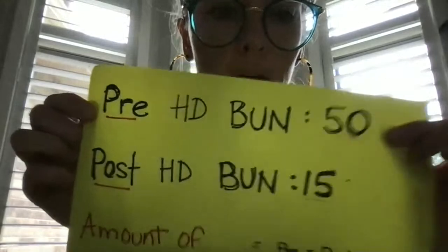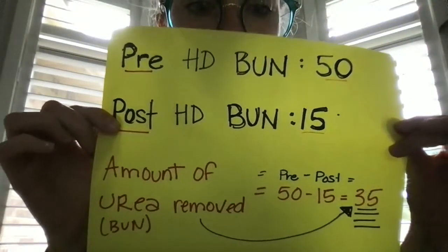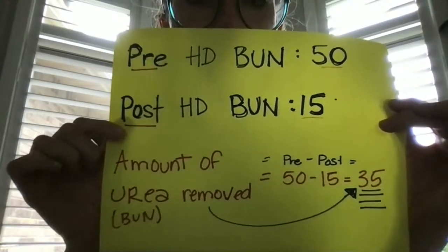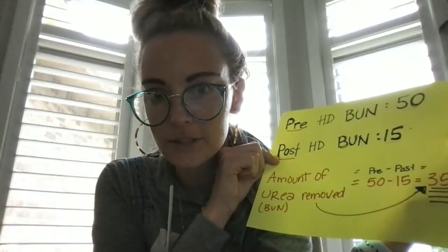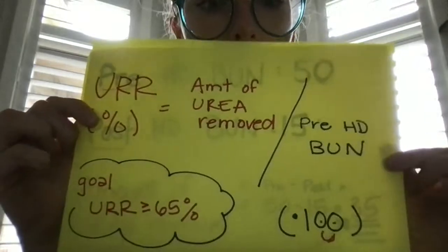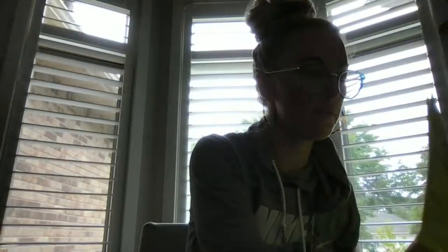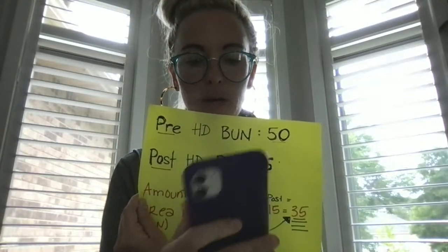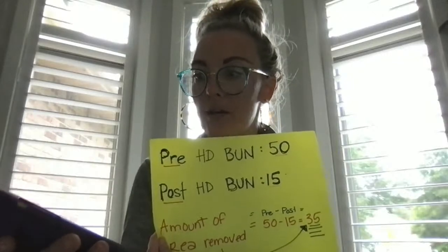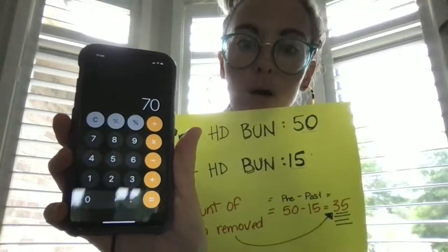Let me do it on paper too so you guys have another visual. Let's say our pre-HD BUN was 50 and the post-HD BUN was 15. The amount of urea removed equals 50 minus 15, which gives us 35. Do you guys have any questions so far? Then the next step: we have the amount of urea removed — 35 — divided by the pre-BUN, which is 50. That gives us 0.7, and if we want to get that to a percentage, we multiply by 100. So this person's URR is 70%.